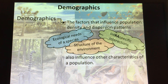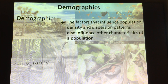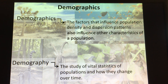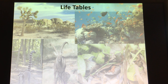The study of these things and how they influence populations is called demographics. Demographics are the factors that influence population density and dispersion patterns, and also how they influence other characteristics of a population. We have something called demography — the study of the vital statistics of populations, grouping and measuring them and looking at how they change over time. Scientists use something called life tables for that.